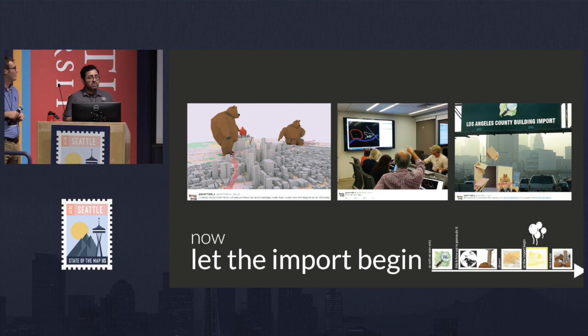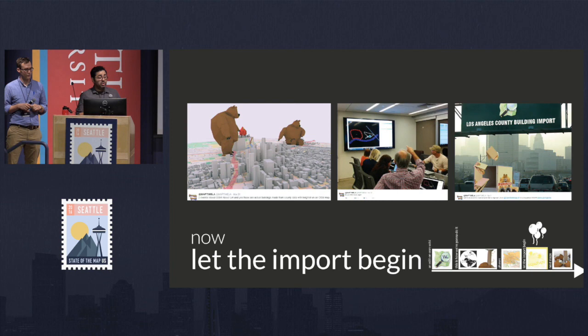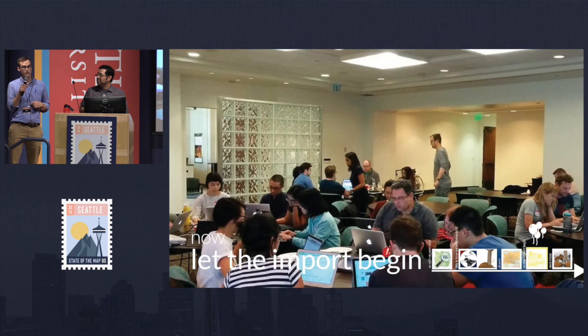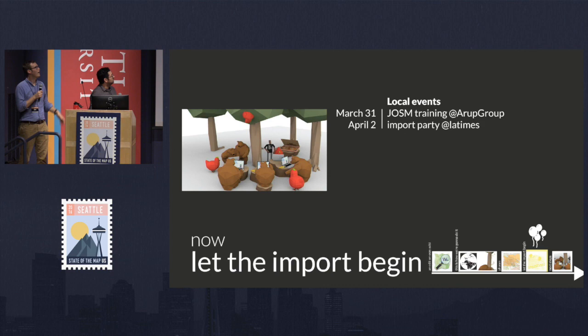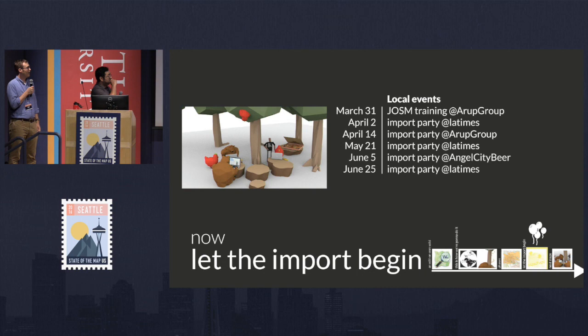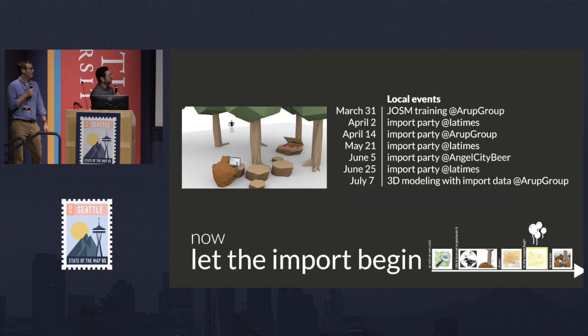We did social media outreach through MapTime LA, which organized some of the mapathon events and tutorials on using ID Editor and JOSM. We started on March 31st with JOSM training, then had an import party on April 2nd — a Saturday at the Los Angeles Times. Then another import party at Arup, which is a great host for MapTime LA events, then another at the LA Times, another at Angel City, and more after that. And there was a tutorial on 3D modeling with import data.